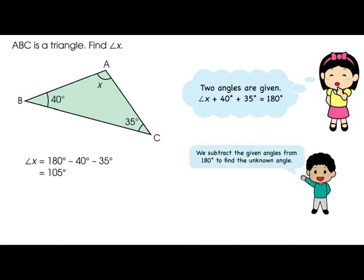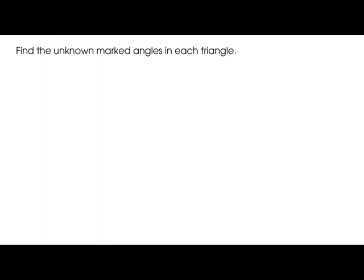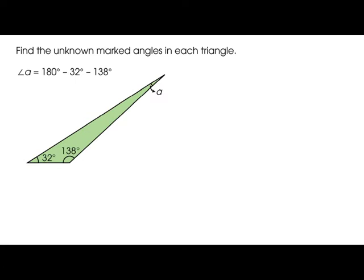Next, find the unknown marked angle. If we have an unmarked angle, we already know that angle A is equal to 180 degrees minus 32 minus 138. You will get the answer: 10 degrees.